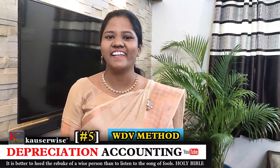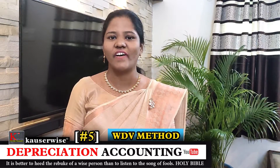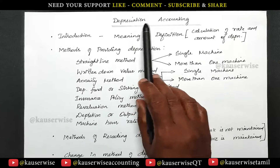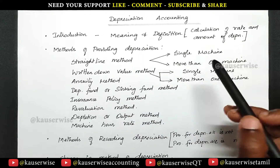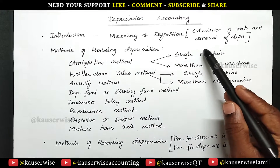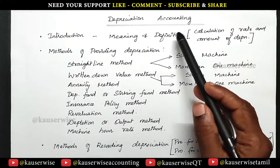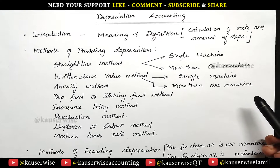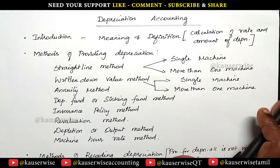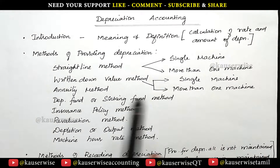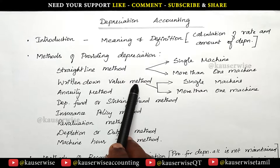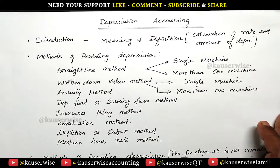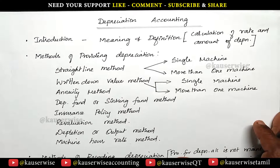Hi, welcome to my channel. This is Kouser Weiss and this is the continuation video of depreciation accounting. You can find the playlist link in the description box to get the full collections. In this video we are going to see one numerical problem for the written down value method when there is more than one machine. Now let's see the problem.